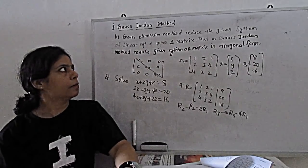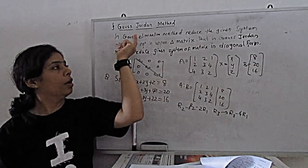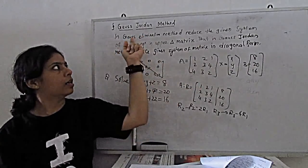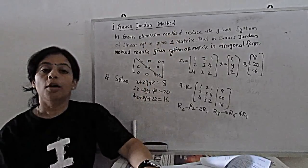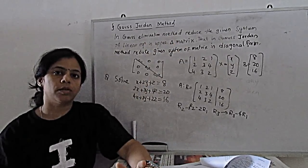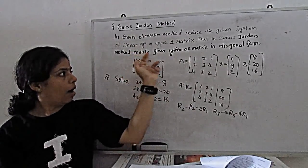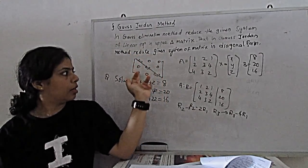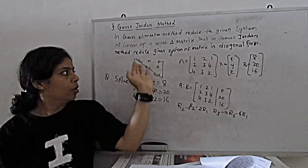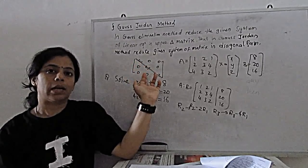In this method, in the previous method, Gauss elimination method, we reduced the given system of linear equations to upper triangular matrix. Means we have the diagonal, above have only elements, below the diagonal these elements become 0.